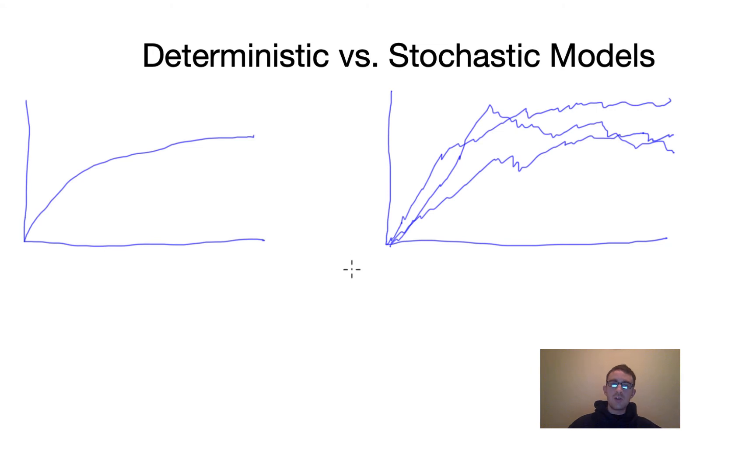So the question is, when should we use deterministic models and when should we use stochastic models? In computational biology, one motivation for using stochastic models is when the random variation in the system is actually what you're interested in studying.